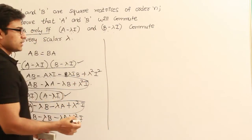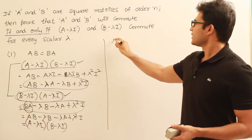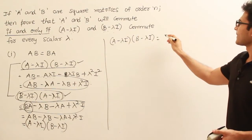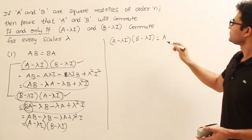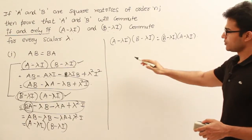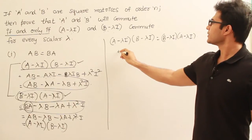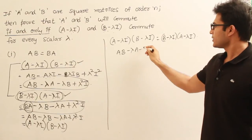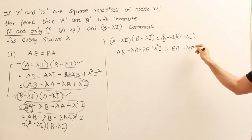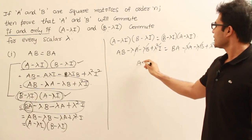Step number two is to prove the converse, since the problem says if and only if. In gate exams we may not need this proof, but the result might be asked. Now assuming A minus lambda I and B minus lambda I commute, meaning A minus lambda I into B minus lambda I equals B minus lambda I into A minus lambda I. The result of the first is AB minus lambda A minus lambda B plus lambda squared I. The result of the second is BA minus lambda A minus lambda B plus lambda squared I.